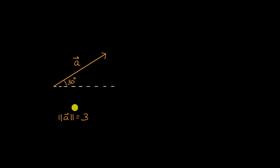In other videos, we have talked about how a vector can be completely defined by a magnitude and a direction. You need both. And here we have done that. We have said that the magnitude of vector A is equal to three units.